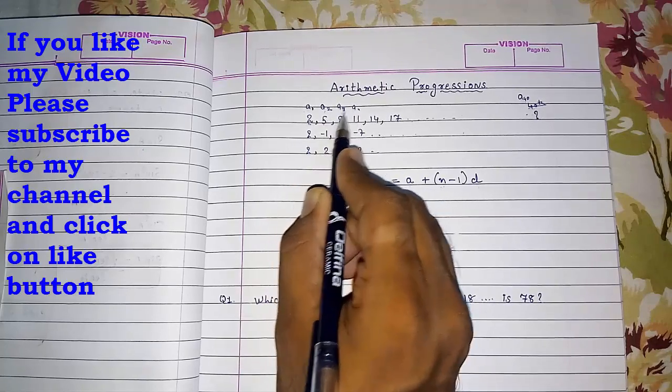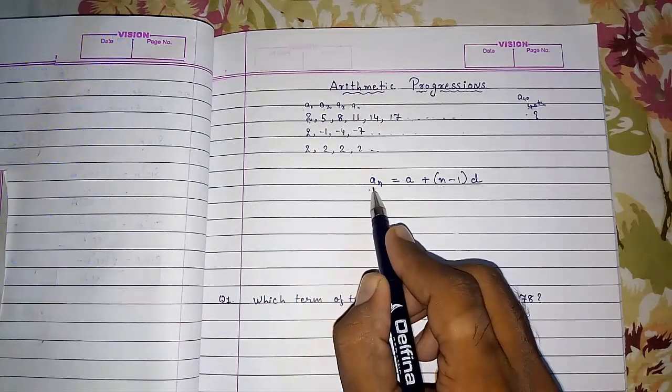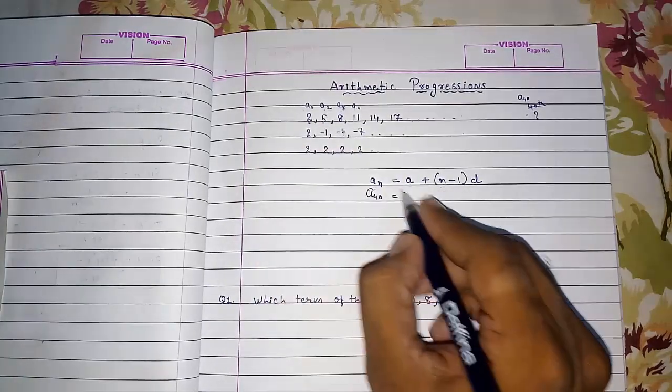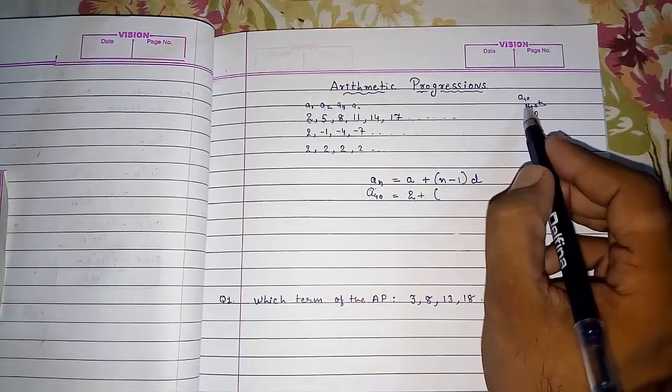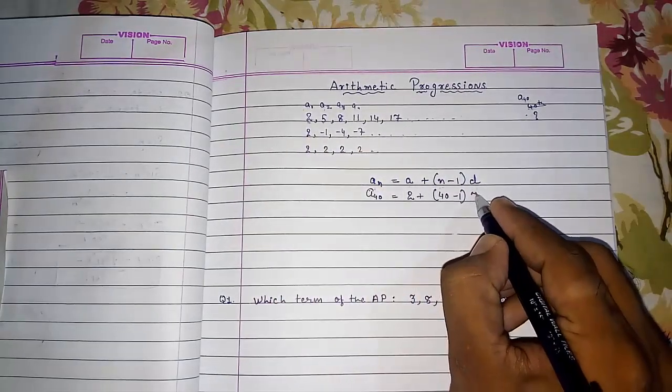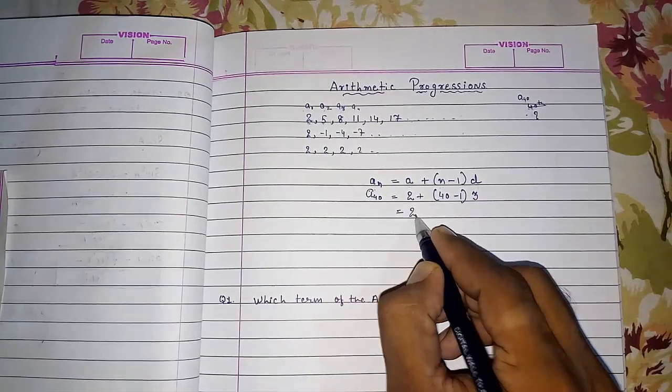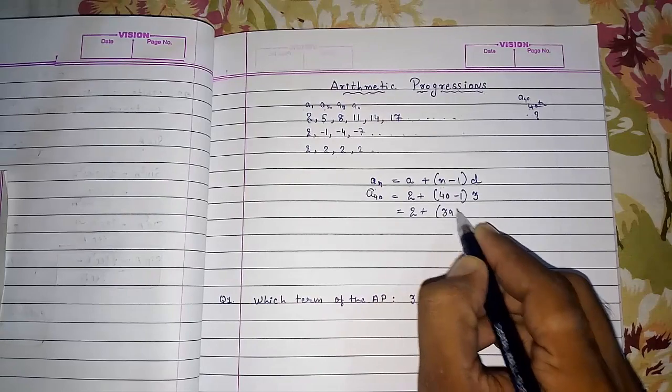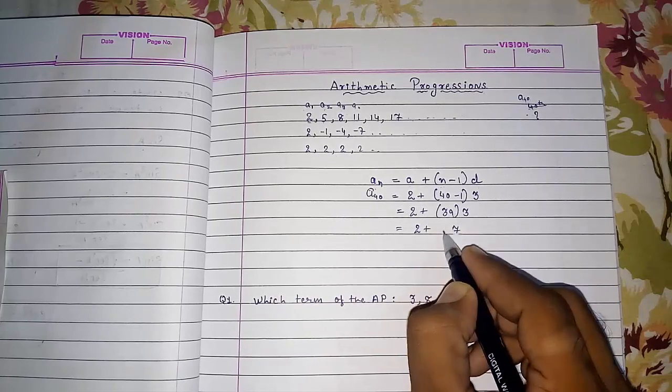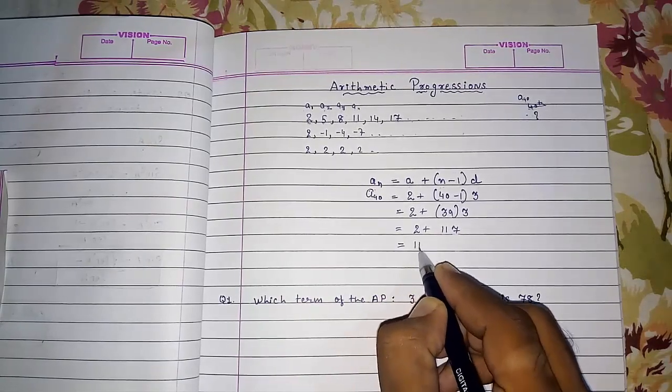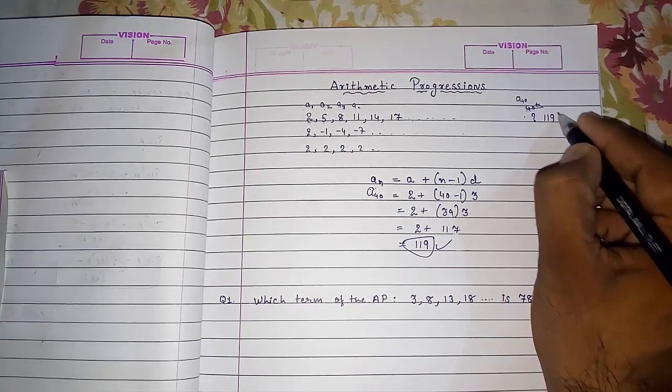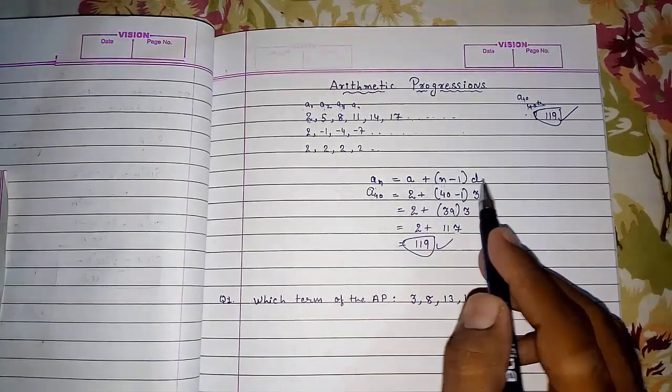Now I want A40. So AN equals A plus N minus 1 into D. And we want the 40th number, so N will be 40 minus 1 and the difference is positive 3. So you will get 2 plus 39 into 3. 2 plus 9 is 27, 2 carry 11. So it will be 119. So this 40th term A40 will be 119.